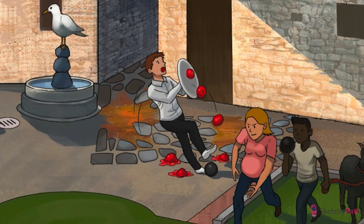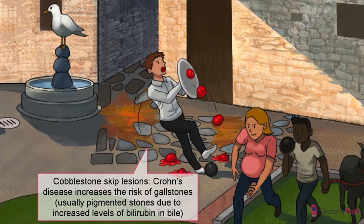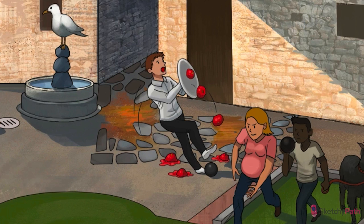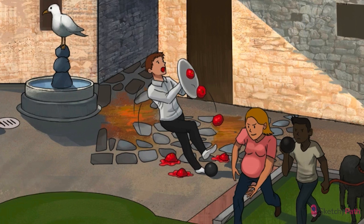Crohn's disease also increases your risk for gallstones. Crohn's is an inflammatory bowel disease that causes cobblestoning and skip lesions throughout the GI tract — so whenever you see skipped areas of cobblestones, think Crohn's. It's been shown that patients with Crohn's disease involving the ileum, or with surgical resection of the ileum, have higher levels of bilirubin in the bile. Other mechanisms, such as reduced GI bile salt resorption and decreased gallbladder motility, have also been proposed. Stones occur twice as often in patients with Crohn's disease, and they're frequently pigmented.